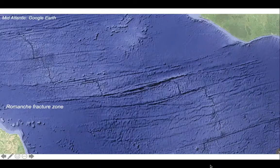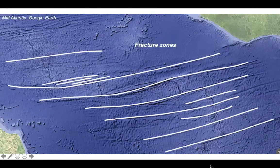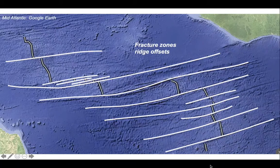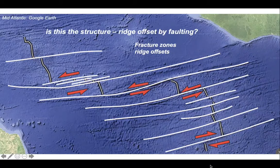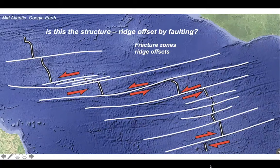Let's zoom in. Here we are in the central part of the Atlantic looking at a feature called the Romance Fracture Zone. Let's add some interpretation of the fracture system. Here are the fracture zones running across the Atlantic between Africa and South America. We can also pick out the ridge system and see the offsets of it. So it's really tempting to suggest that this pattern is developed as if the fracture zones were faults, and that the sense of movement is as arrowed on there. So is this the structure — a ridge offset by faulting?